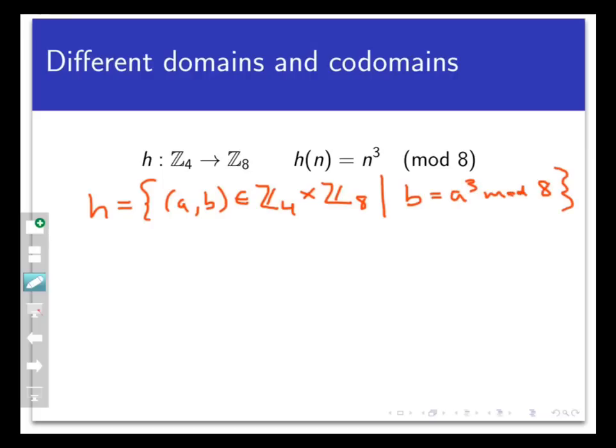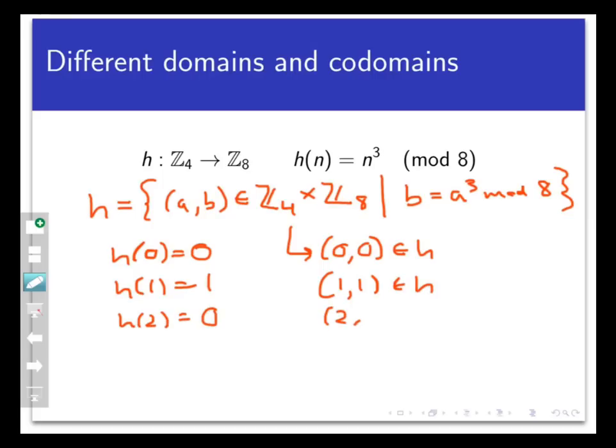If x is 0, then y is 0 cubed mod 8, which is 0, so 0, 0 belongs to the function h. If x equals 1, then I have 1 cubed mod 8 equals 1, so 1, 1 is in h. If x equals 2, then 2 cubed mod 8, which is 8 mod 8, which is 0, so 2, 0 is in h.